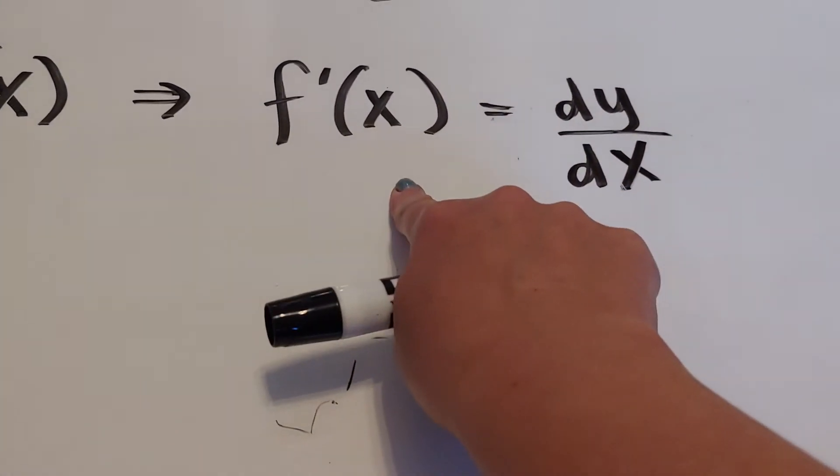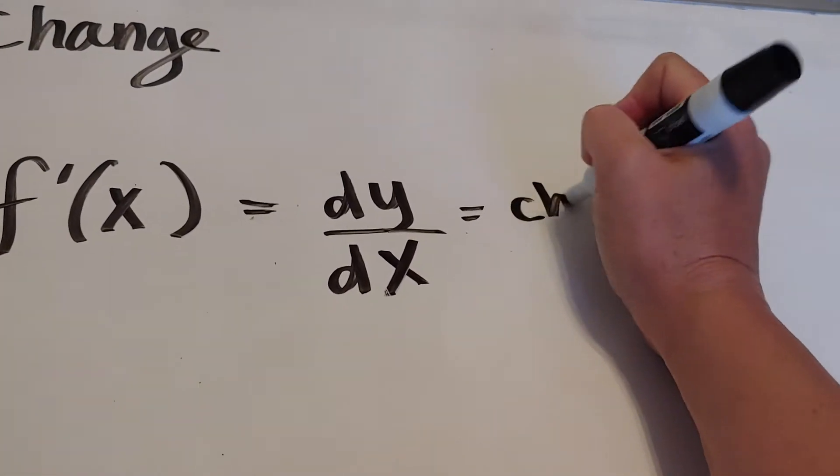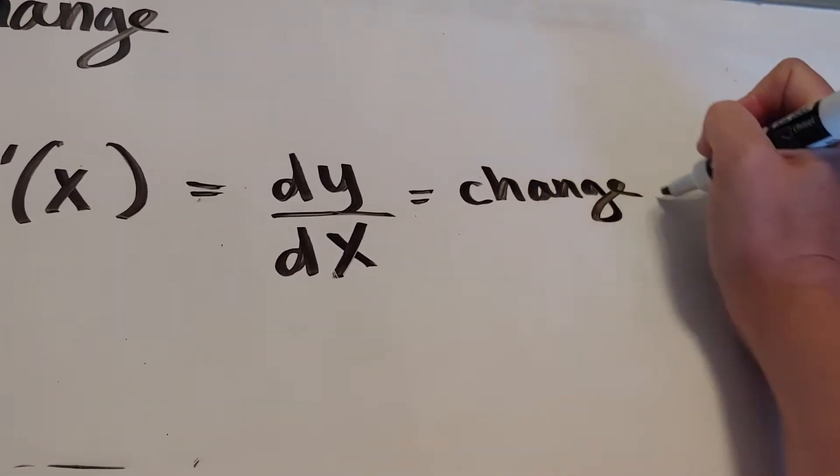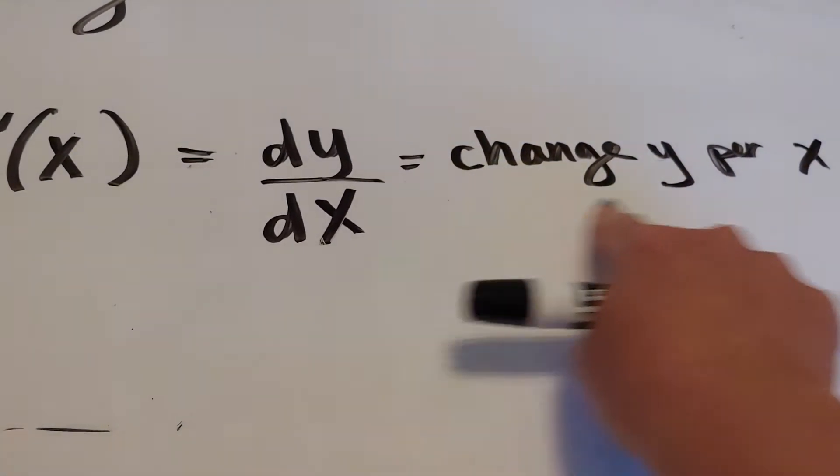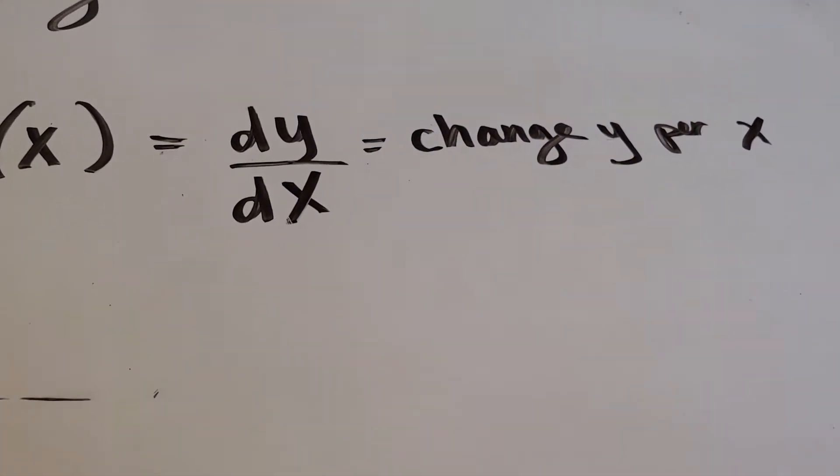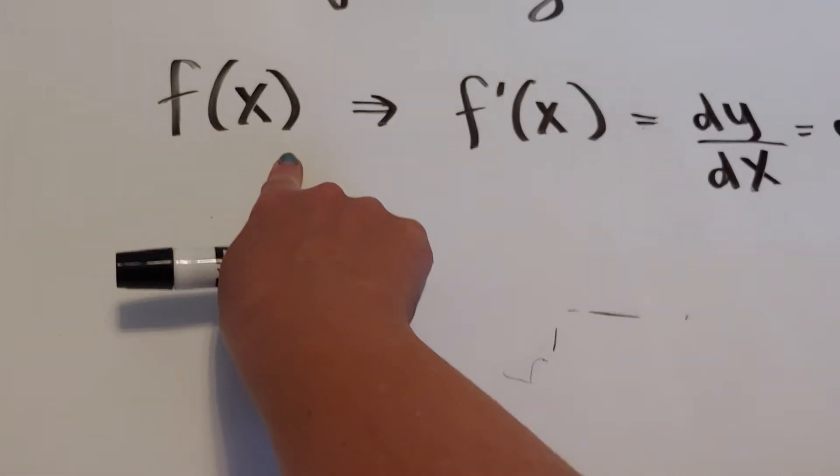So what the derivative is saying is it'll tell you your instantaneous change of y per x. That's your rate of change. The reason why I'm bringing this up is that it doesn't have to be f's and x's.